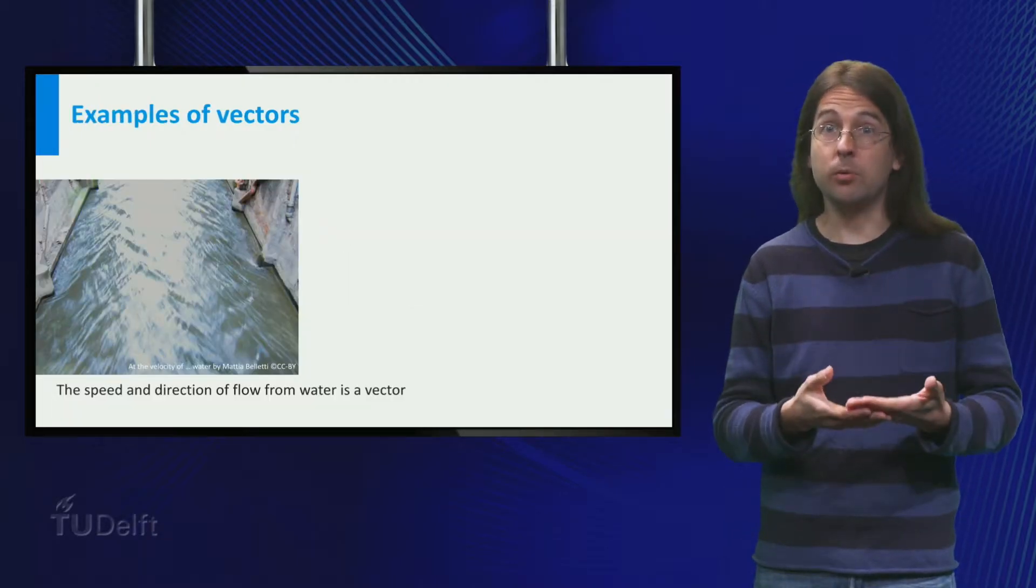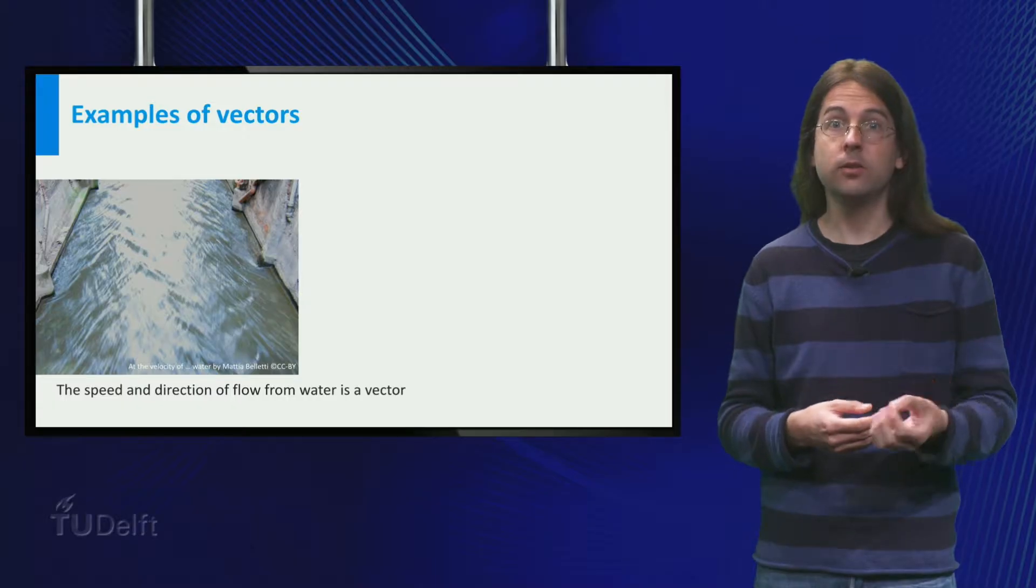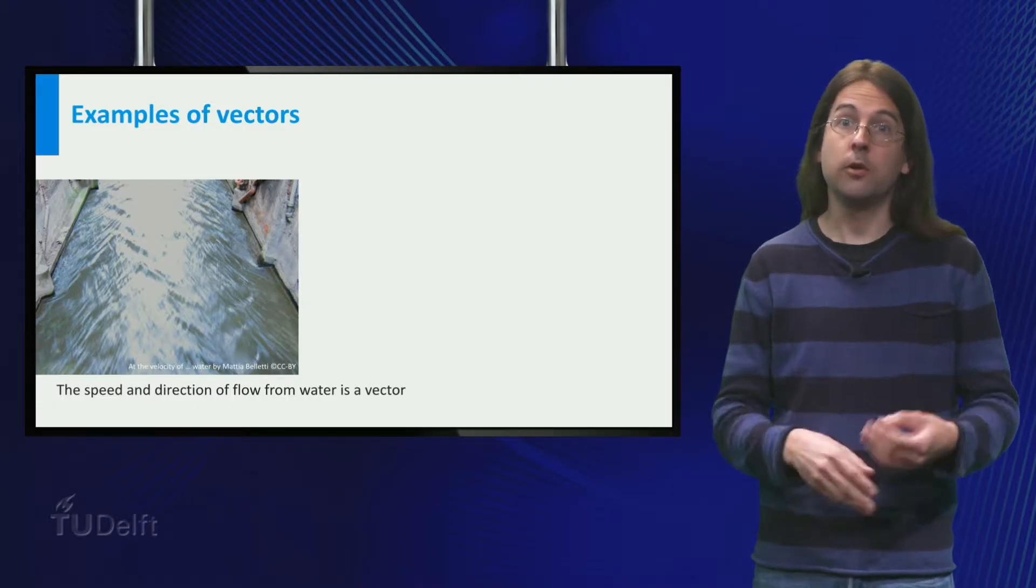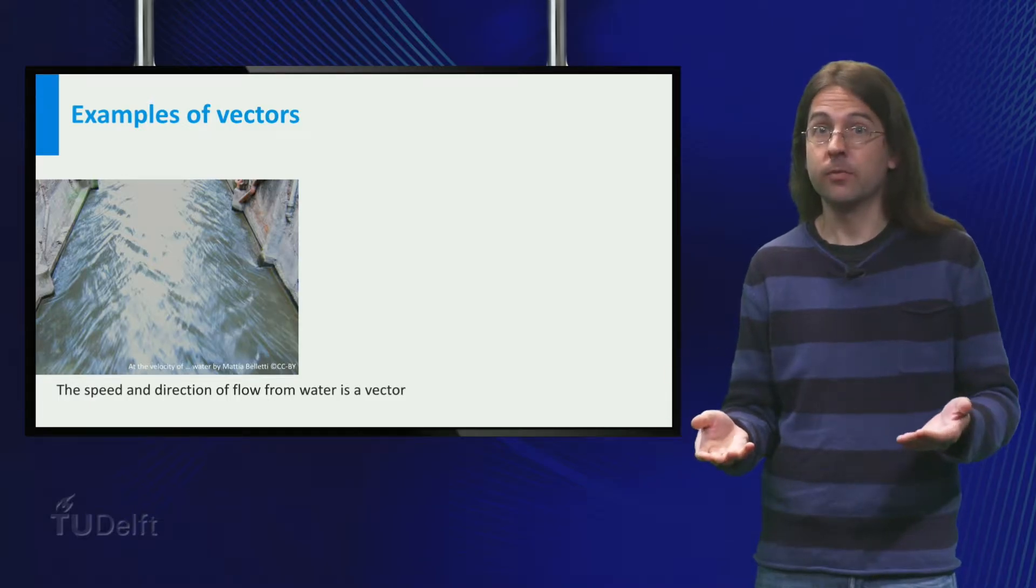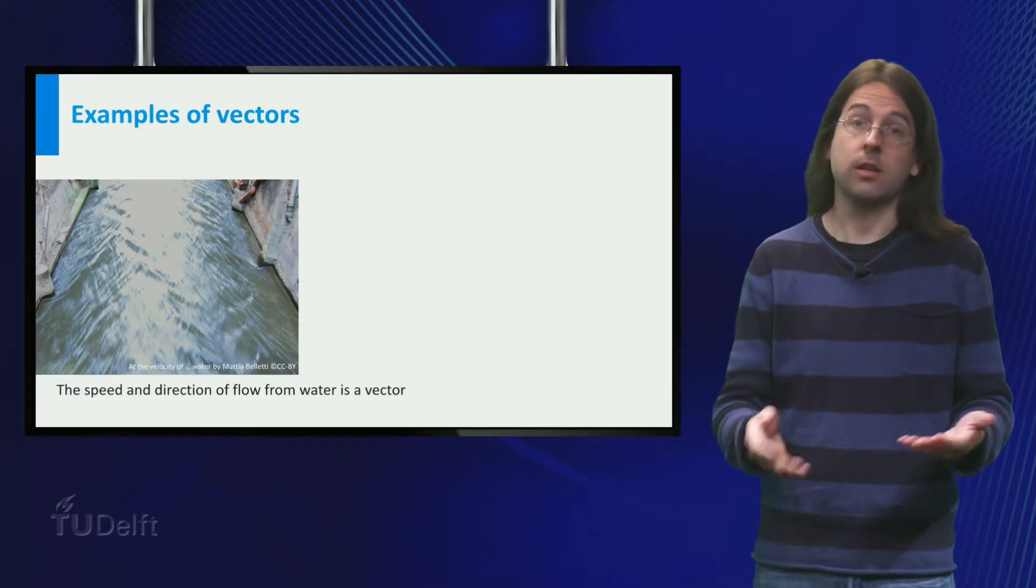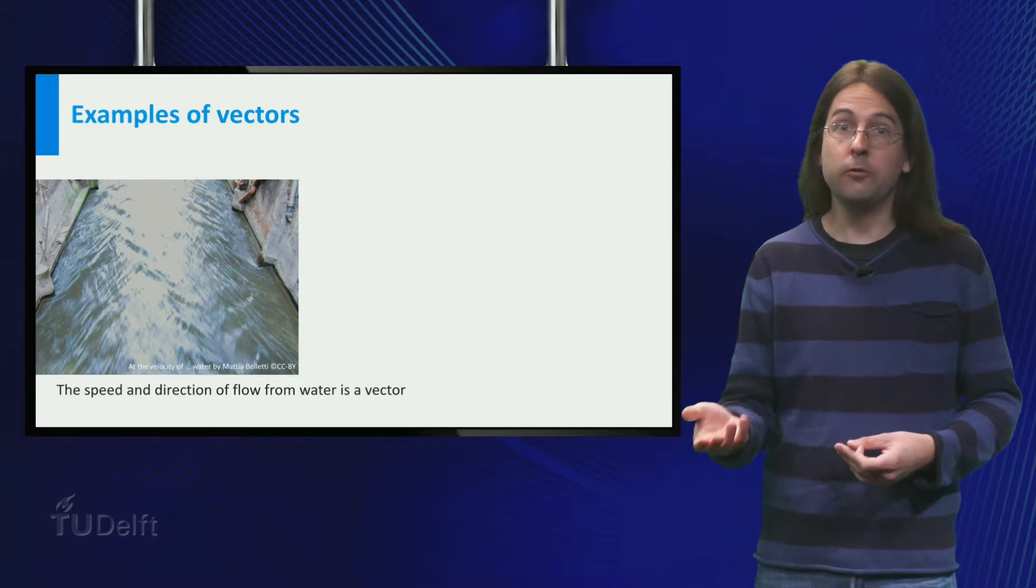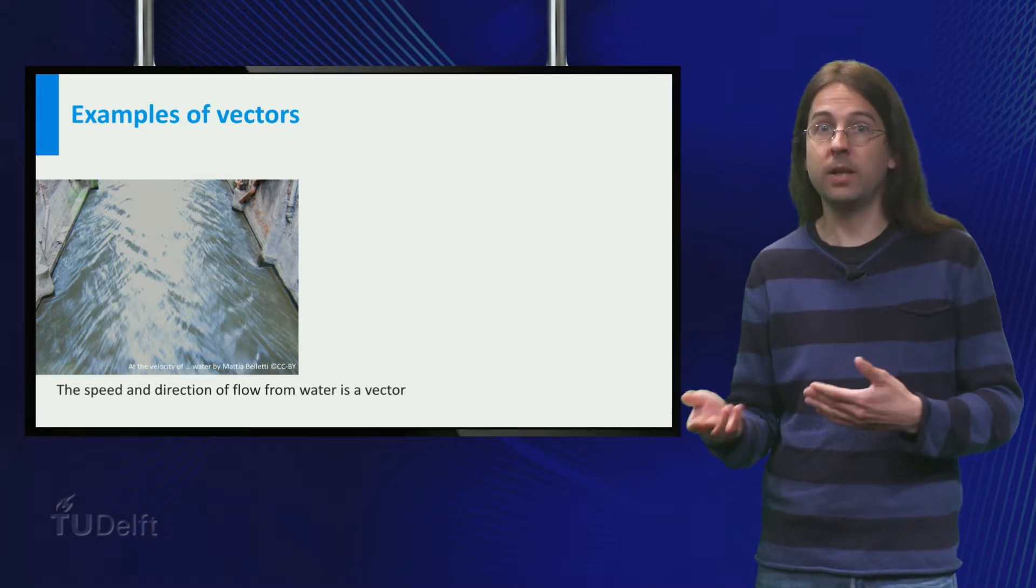In this example you see that you can use a vector to describe a flow. A flow of water, but of course wind is a flow of air. Or electric charge, down a wire. Or a flow of people, moving from one place to the other.